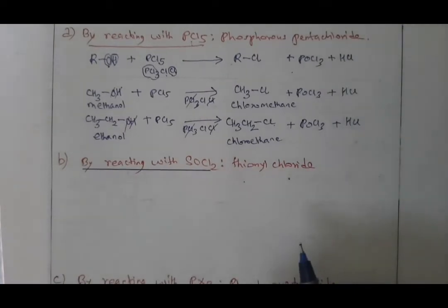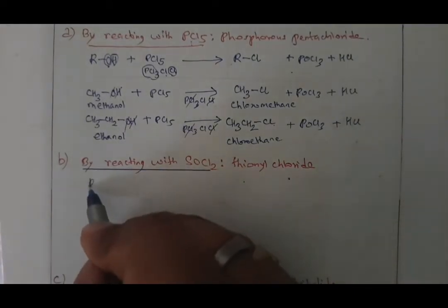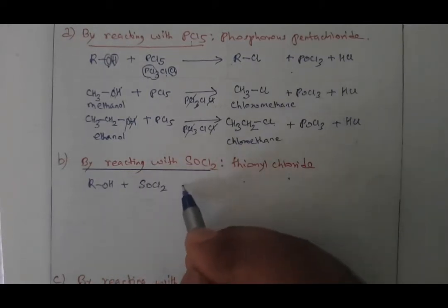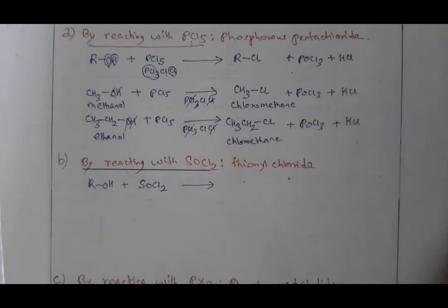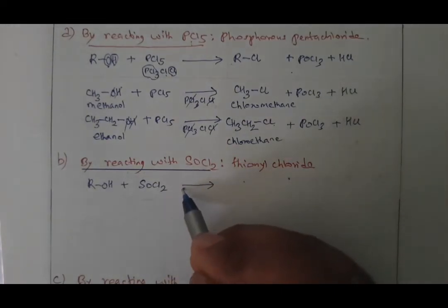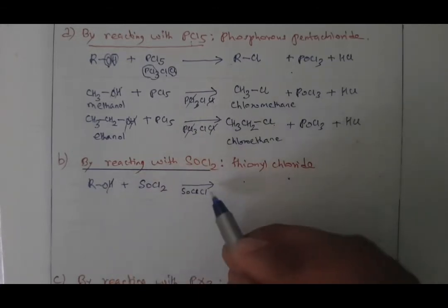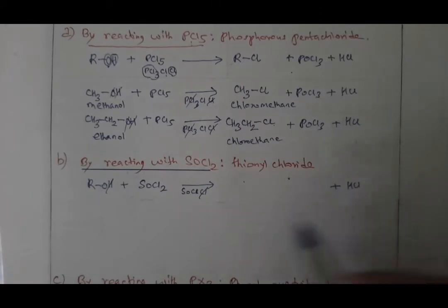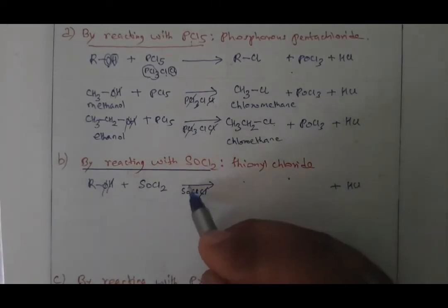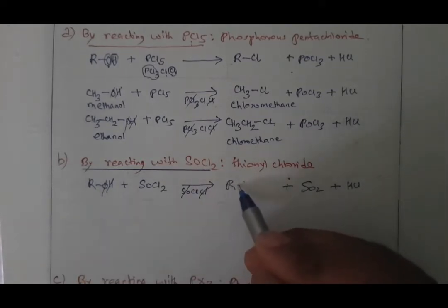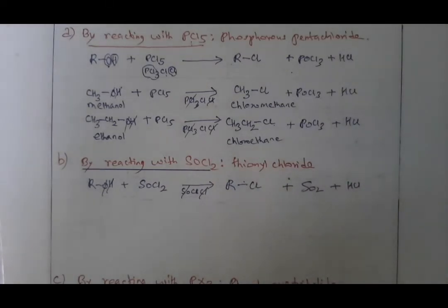Method B uses thionyl chloride, SOCl2. Take alcohol ROH and react with SOCl2. Break SOCl2 into SOCl and Cl. One Cl goes with H to form HCl; O goes with SO to form SO2 (sulfur dioxide). What is left — R — combines with the leftover Cl to form RCl, alkyl chloride.